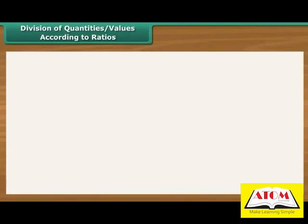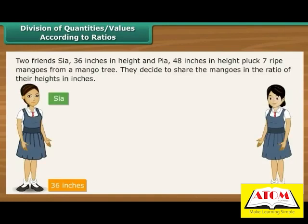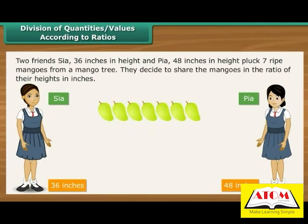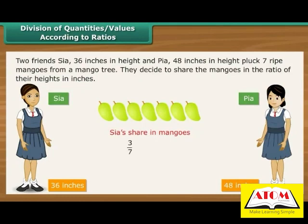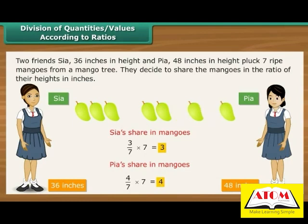Division of quantities and values according to ratios: Two friends, Sia at 36 inches in height and Pia at 48 inches in height, pluck 7 ripe mangoes from a mango tree. They decide to share the mangoes in the ratio of their heights. The ratio of their heights is 3 is to 4. It means that out of every 7 mangoes, 3 will be eaten by Sia and 4 by Pia.